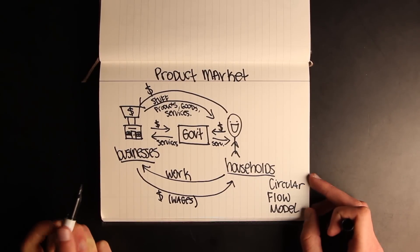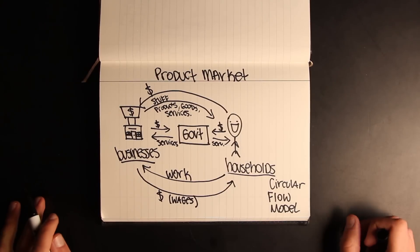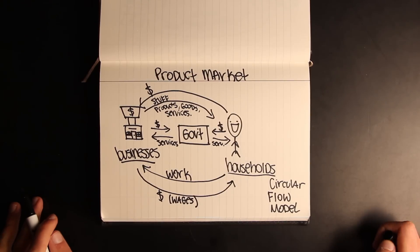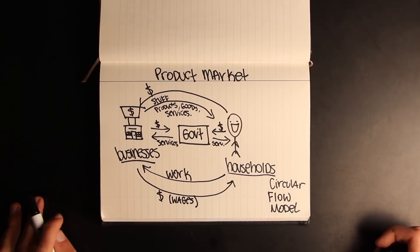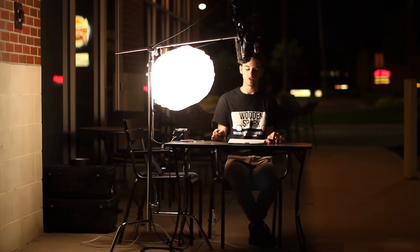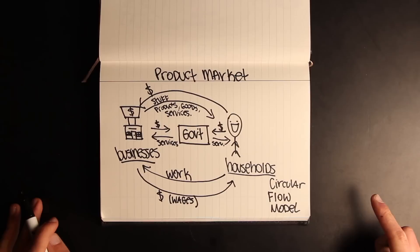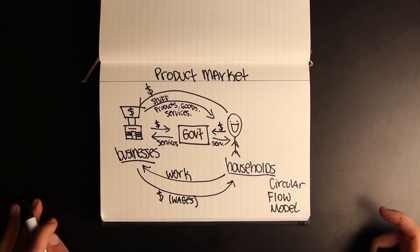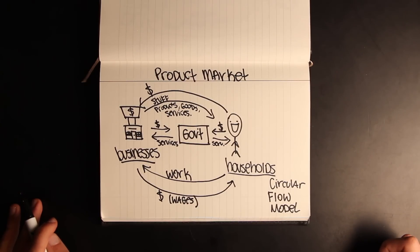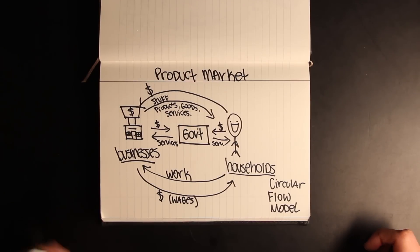So to recap: everyone gives money to the government, the government provides everyone with services, people give businesses money, businesses give people stuff, people give businesses work, and businesses give people wages. That's how the economy works.